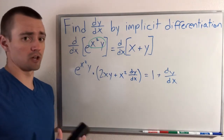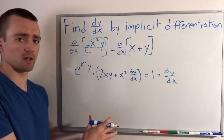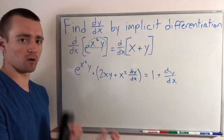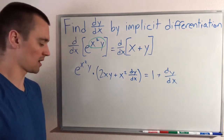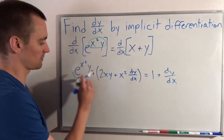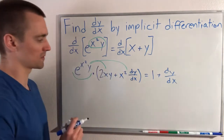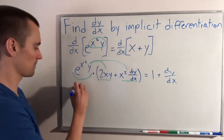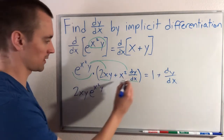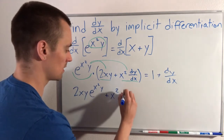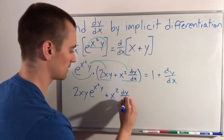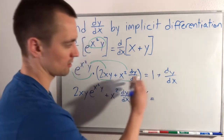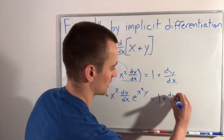Now, just like we do generally with implicit differentiation problems, once we've taken the derivative of both sides with respect to x, we want to expand everything out and simplify so that we can start sorting out our dy/dx terms from our non-dy/dx terms. To do that, we'll distribute e to the x squared y throughout our parentheses, which gives us 2xy times e to the x squared y, plus x squared dy/dx times e to the x squared y. The right side stays as 1 plus dy/dx.